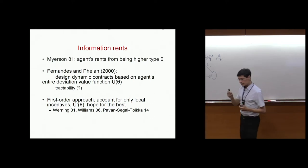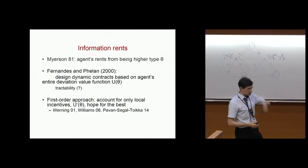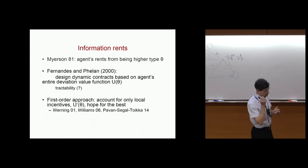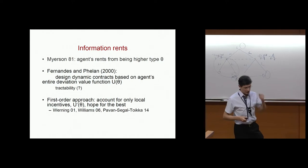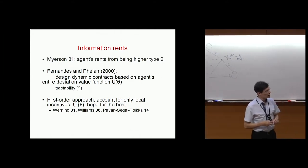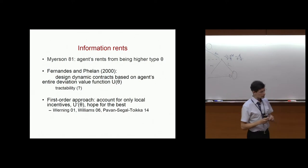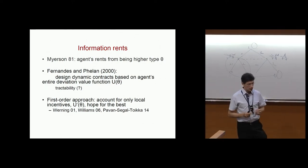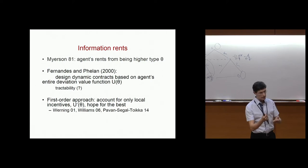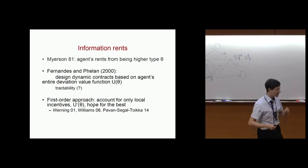In settings where the agent has private information — whether generated by the agent's past actions or by learning something new — what matters is the agent's information rent. Myerson calls it the agent's information rent, and this term comes from the rent the agent has from having better private information. For example, a firm could have low-value and high-value customers and wants to extract as much rent as possible, but the high-value customer can pretend to be a low-value customer, so you have to leave some rents to high-value customers.